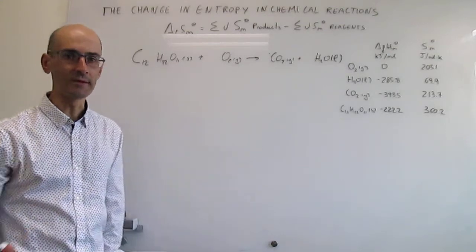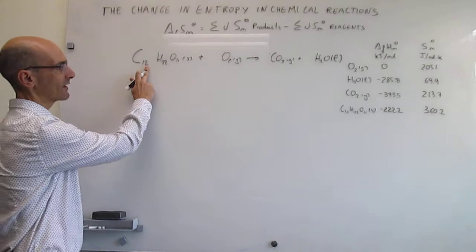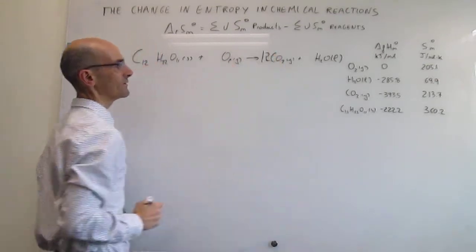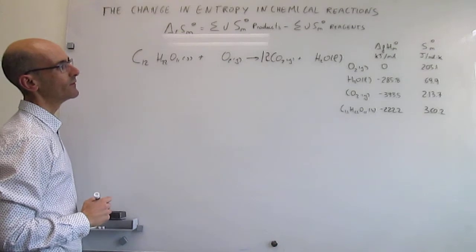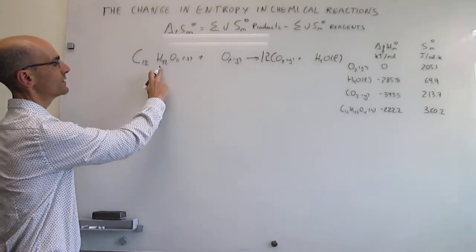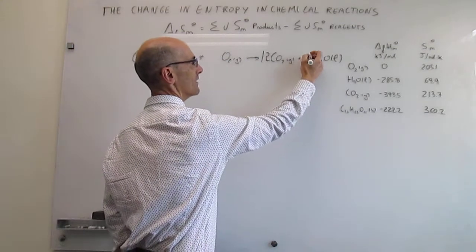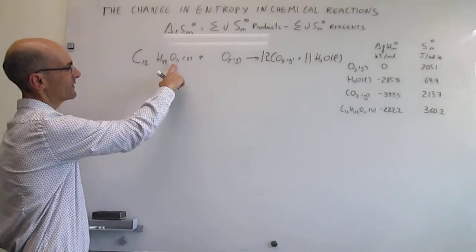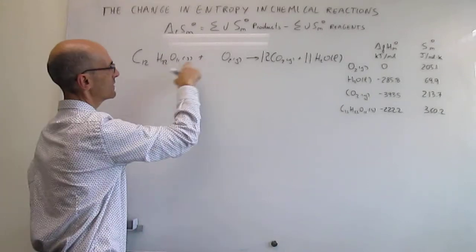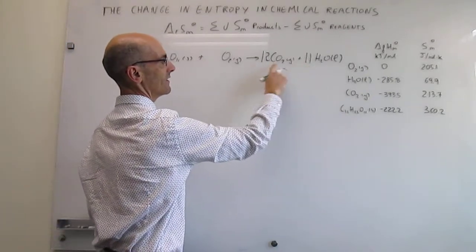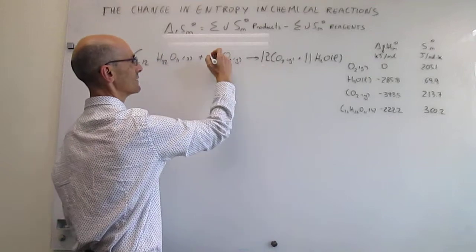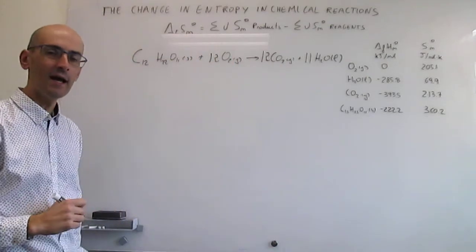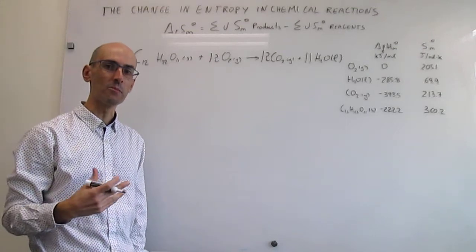In order to do these calculations correctly, we need to balance the reaction appropriately. We have 12 atoms of carbon in reagents, so we need a coefficient of 12 for CO2. For hydrogen, we have 22, so we need 11 for water. Then we balance oxygen: we have 11 oxygen atoms in sucrose, 24 from CO2, and 11 from water, so that means we need to put 12 here for O2. That is how you balance this chemical reaction.